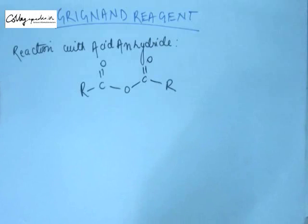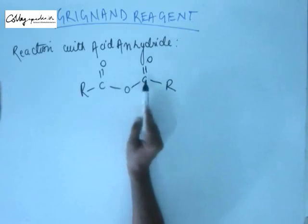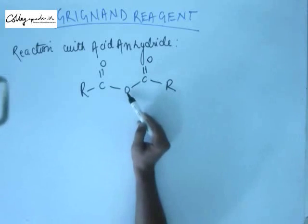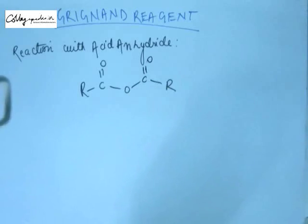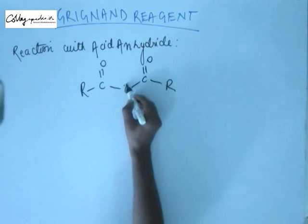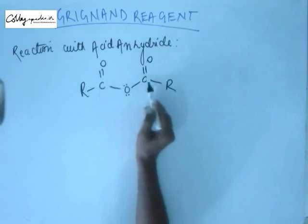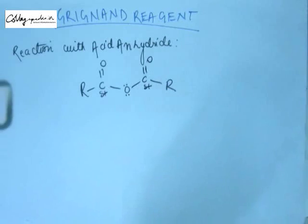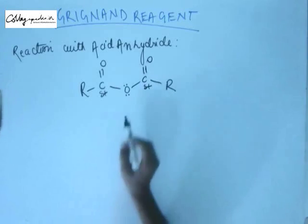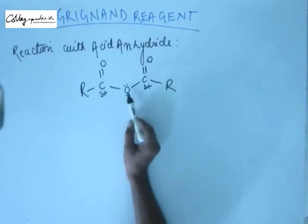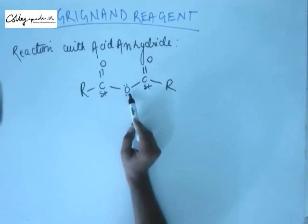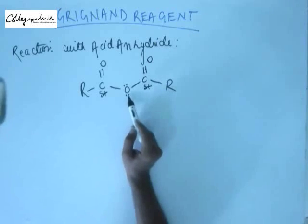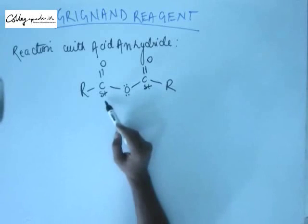Now if we look at the reaction of Grignard reagent with acid anhydride — this is the structure of an acid anhydride where H2O has been removed from two acids, resulting in this C-O-C bond between two carbonyl groups. Acid anhydride also has a plus M effect of this oxygen on both carbonyl compounds, so the amount of plus charge on these carbonyl carbons will be less than that in ketones and aldehydes, where you only have a weak inductive effect from R groups. So acid anhydride will be less reactive than acyl chlorides and less reactive than carbonyl compounds.